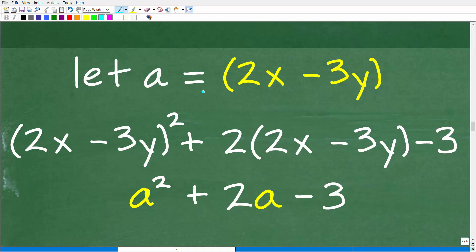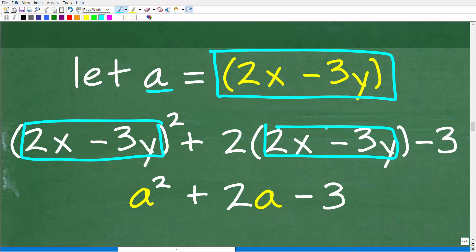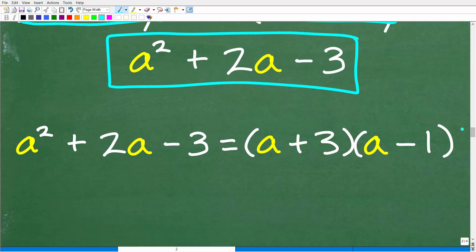So if we let a equal 2x minus 3y, this right here is 2x minus 3y. So we can replace this with a. So we end up with a squared plus two times 2x minus 3y. We can replace this with a as well. So we have a squared plus 2a minus 3. Now we have a lovely quadratic trinomial. And this thing right here, this is one of these little pop quizzes that I gave you, one of the pop quiz questions that I gave you in the beginning of this video. This can be factored.